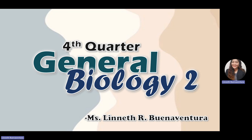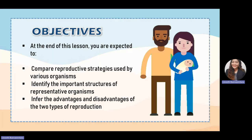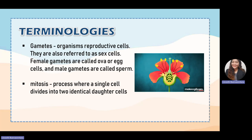Good day everyone. This is a recorded discussion for the fourth quarter General Biology number two. Today we're going to discuss Module number two, entitled 'Reproductive Strategies of Plants and Animals.' At the end of our lesson, you are expected to compare reproductive strategies used by various organisms, identify the important structures of representative organs, and infer the advantages and disadvantages of the two types of reproduction.